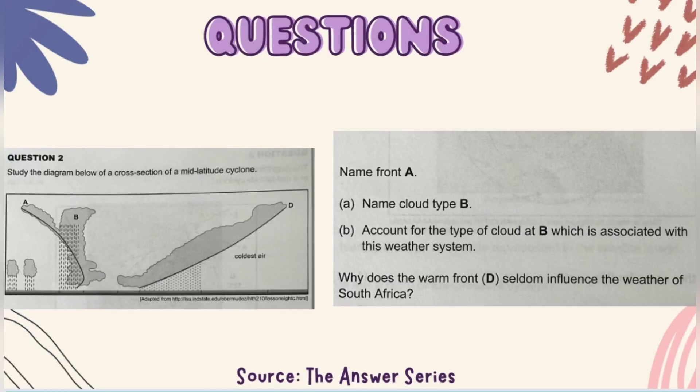Question 2.2a: Name cloud type B. I've already said it's a cumulonimbus cloud. Account for the type of cloud at B which is associated with this weather system. So they're basically asking you what formed B, why is the cumulonimbus cloud a cumulonimbus cloud?